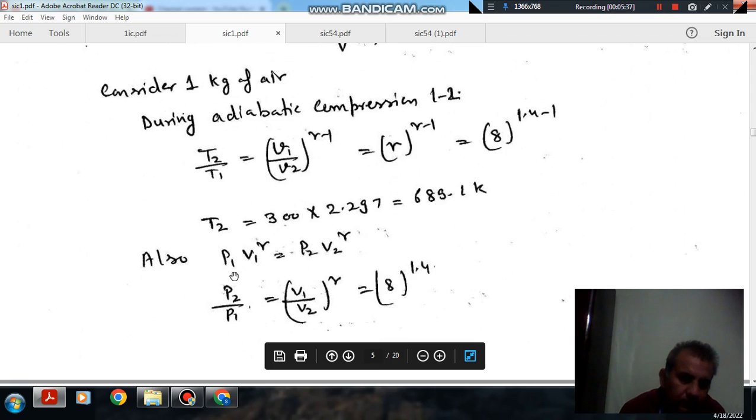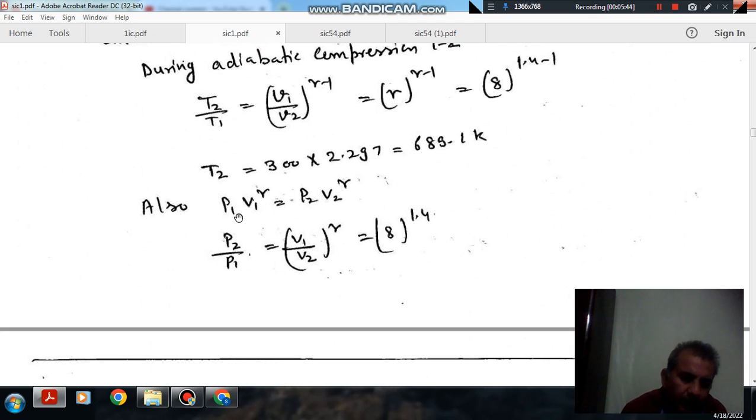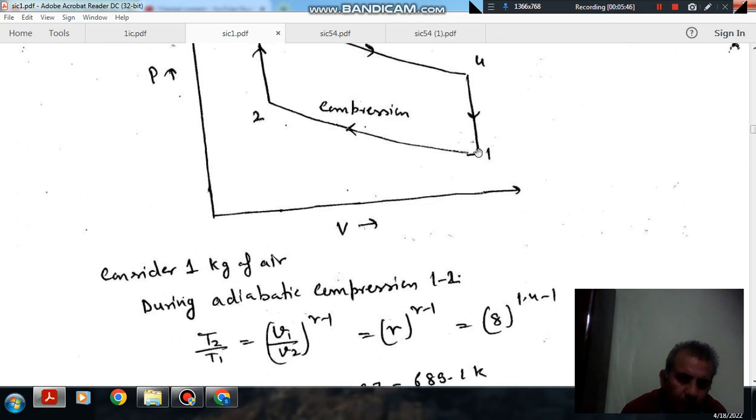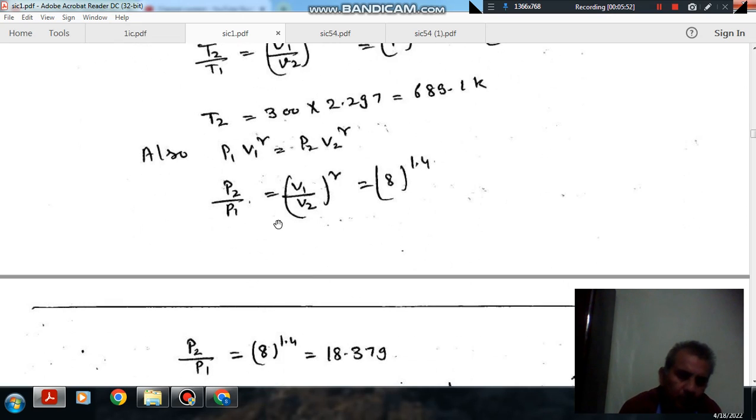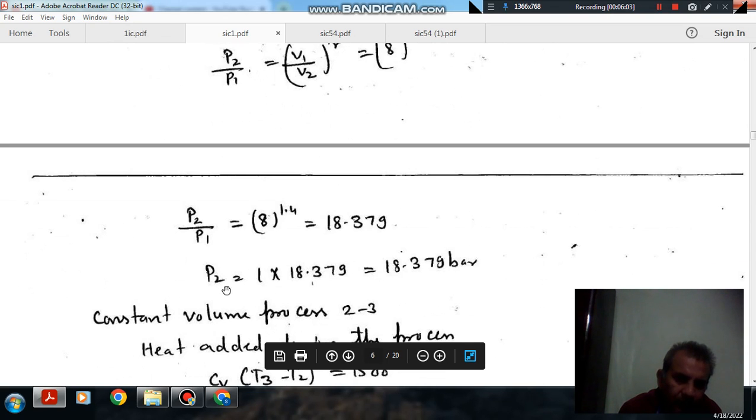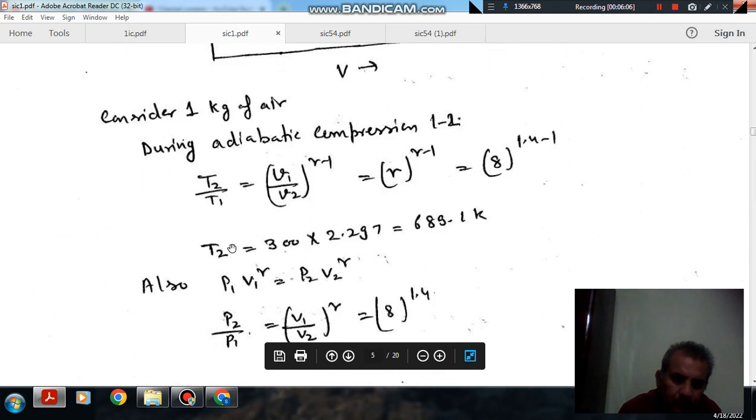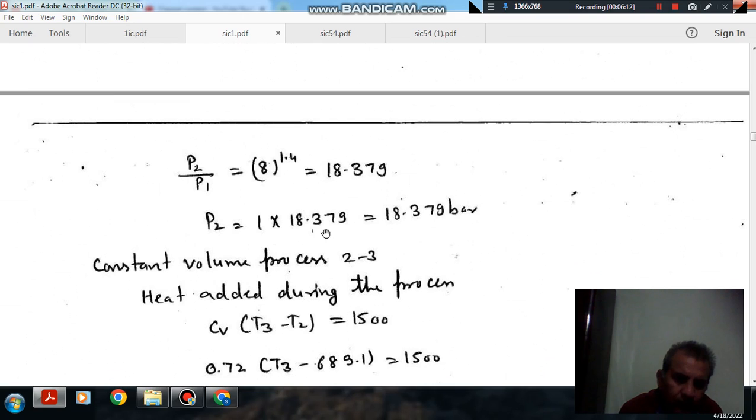So, P2 can also be found out by using P1V1 to the power gamma equals P2V2 to the power gamma. So P1 by P2 equals V2 by V1 to the power gamma. So, the ratio P2 by P1 is 18.379 and as P1 is 1 bar, so P2 is 18.379 bar.